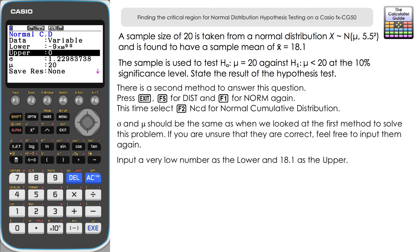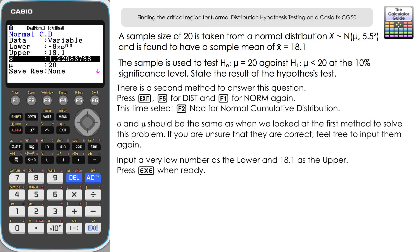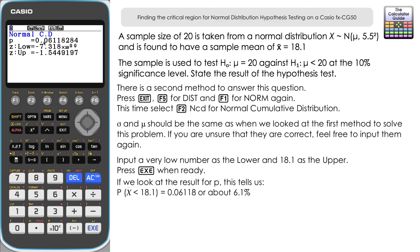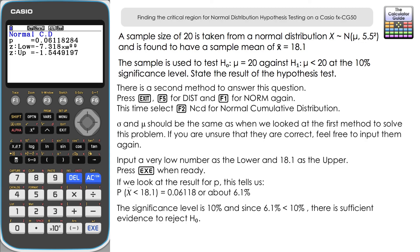Keep sigma and mu as before and press execute. The result is p = 0.061, which is 6.1%. Since 6.1% is less than the 10% significance level, there is again sufficient evidence to reject H₀ in favour of H₁. Both methods give the same conclusion, as expected.